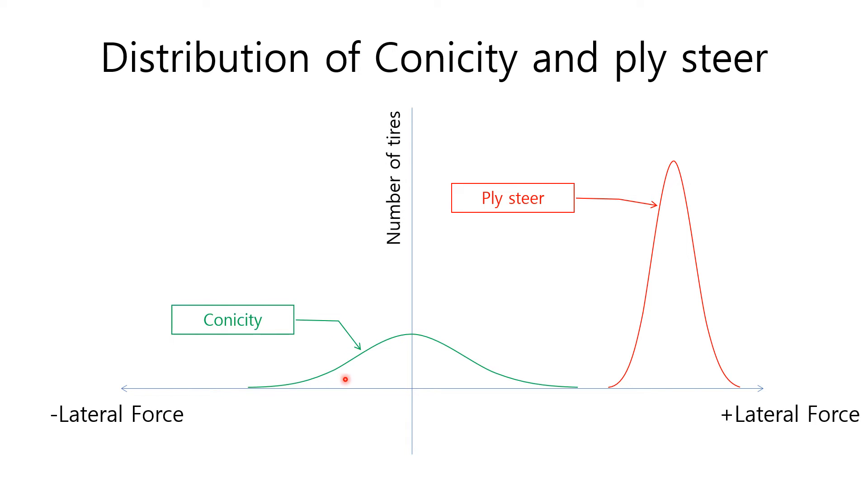This is the characteristic of manufacturing. On the other hand, average lateral force due to Ply Steer distribution is a bit away from zero compared with that of conicity. But the standard deviation is smaller than that of conicity. This is the characteristic of design.